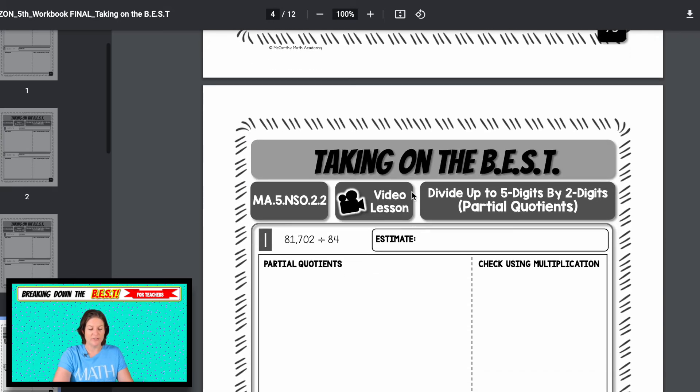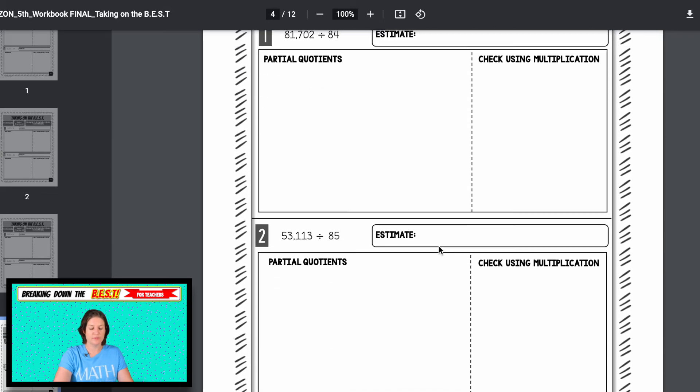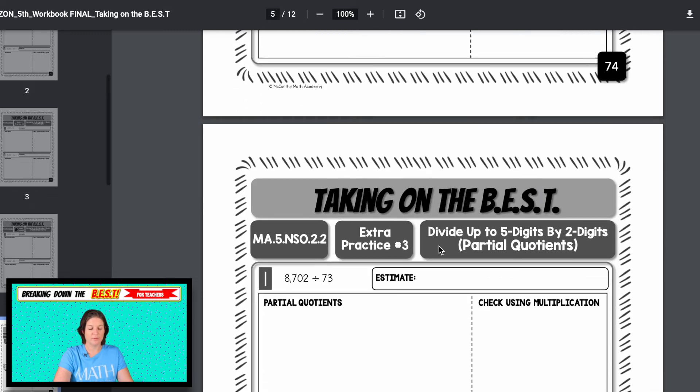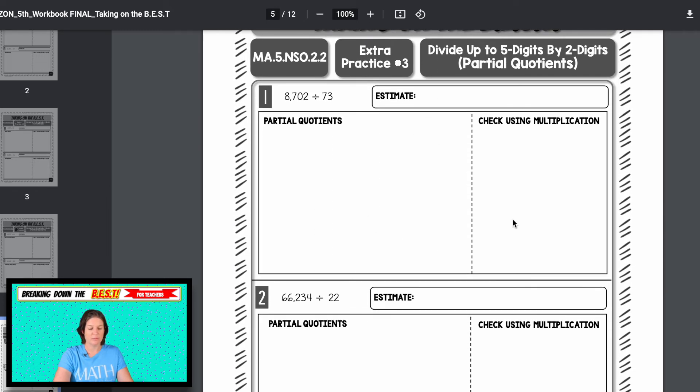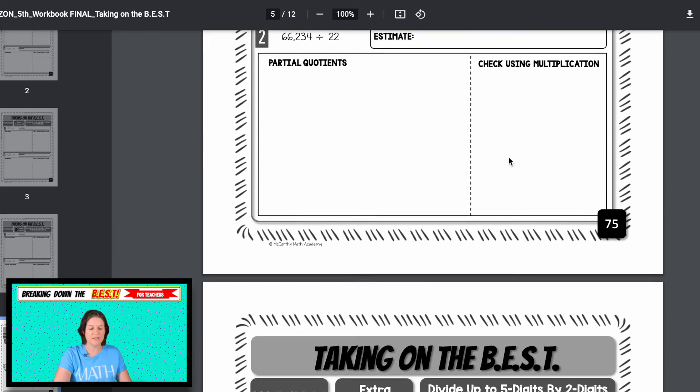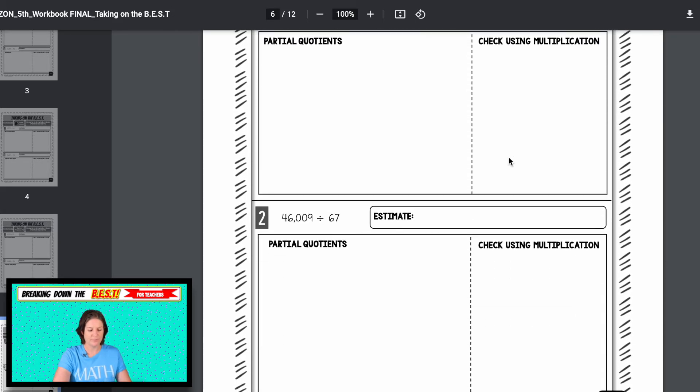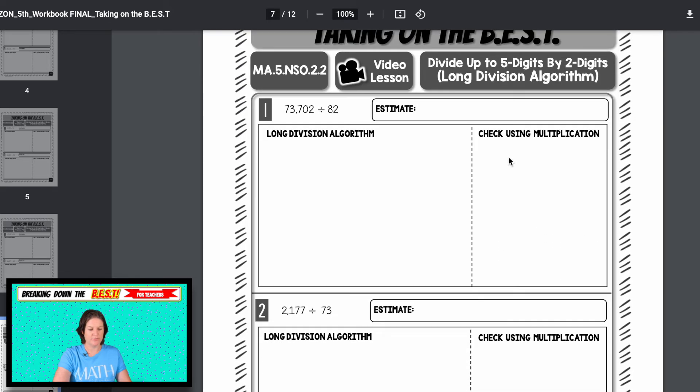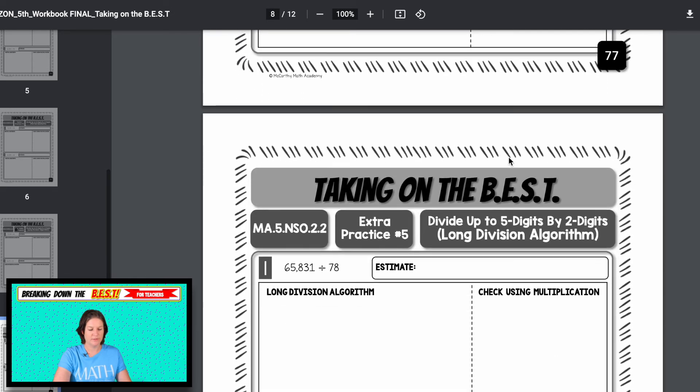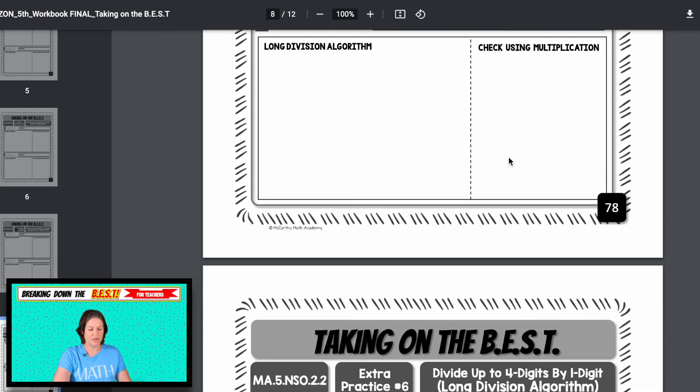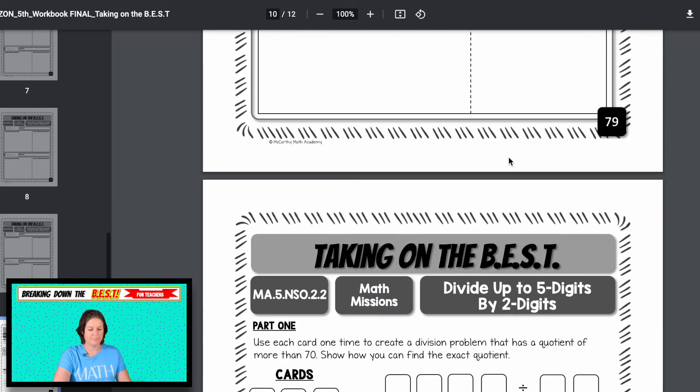That's totally fine. They can just check their answers with that answer key if you want. And then we have the video lesson for partial quotients. Checking using multiplication, here's extra practice. And if you give out this extra practice, and you have somebody that likes the area model better, that's fine. According to the standard, it's fine. Long division. And then extra practice for the long division.